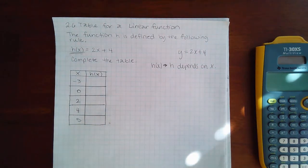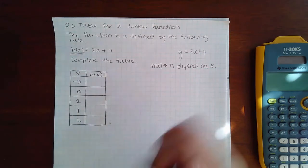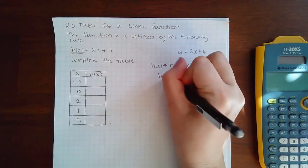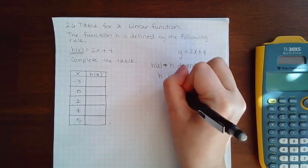So for every single x value that you're given, you will find a different h value. And h is a name for the y value.